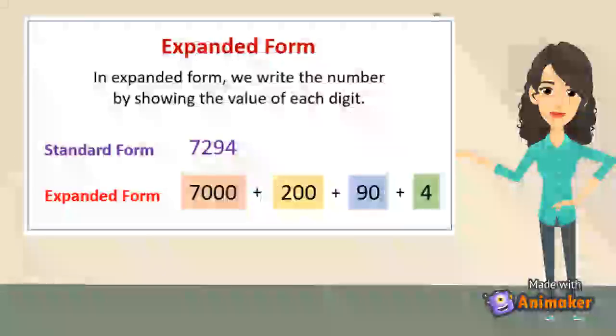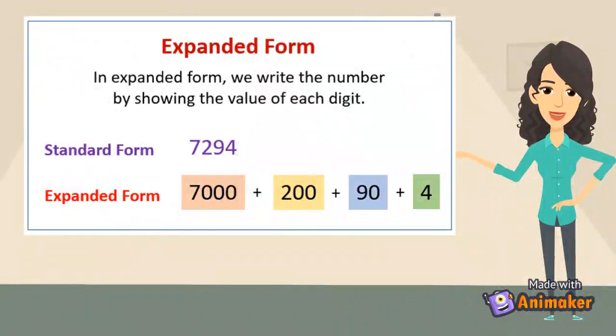For example, 7294 is the standard form and the expanded form is 7000 plus 200 plus 90 plus 4.